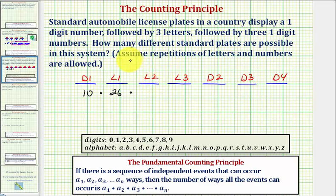And now for this next letter, because repetition is allowed, there would also be twenty-six ways here, as well as here. If there wasn't repetition allowed, of course this would be different. This would be twenty-five and then twenty-four.